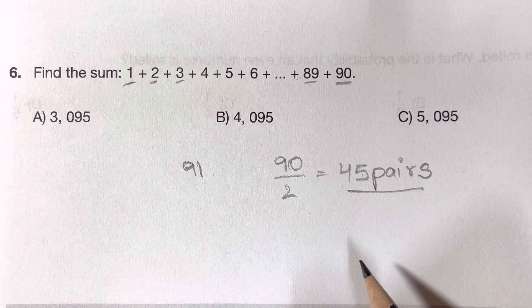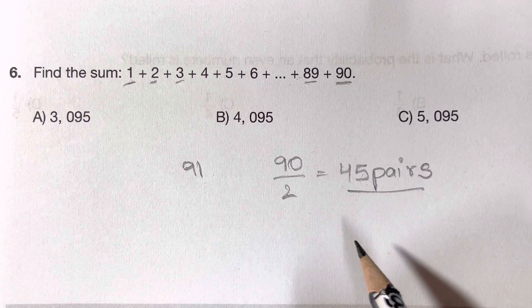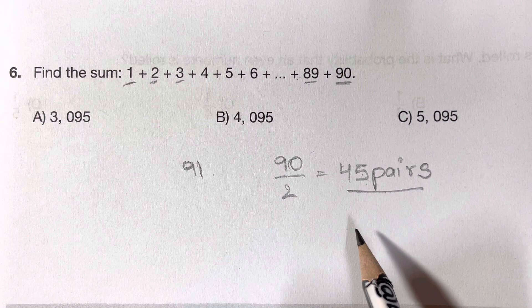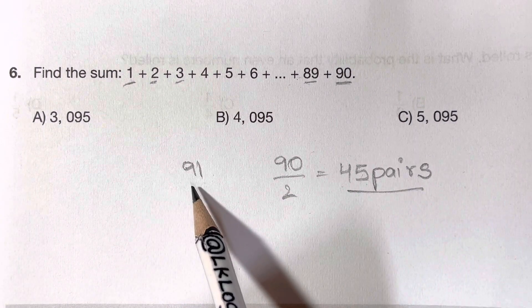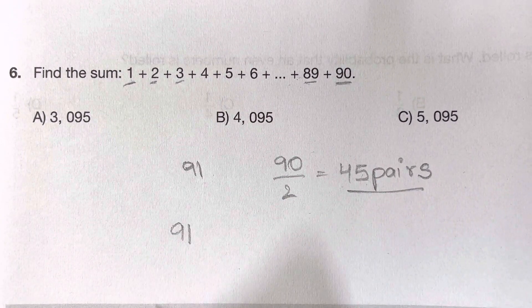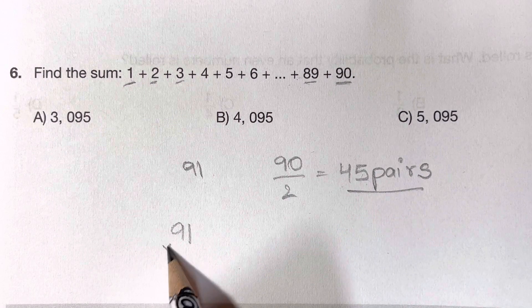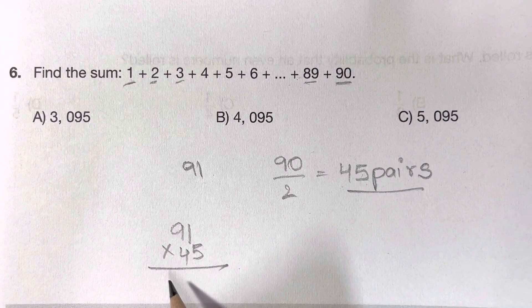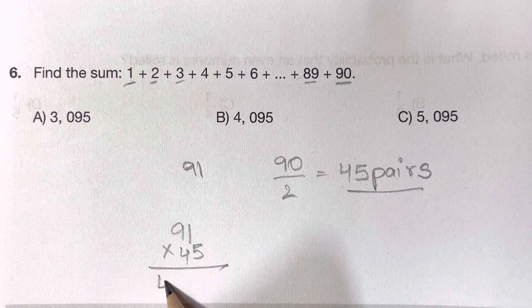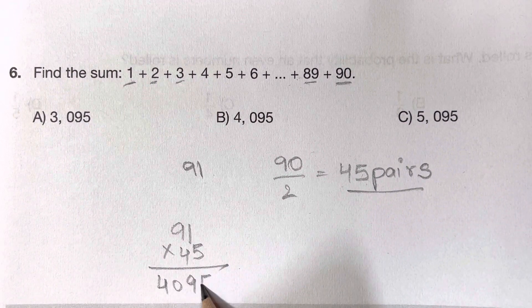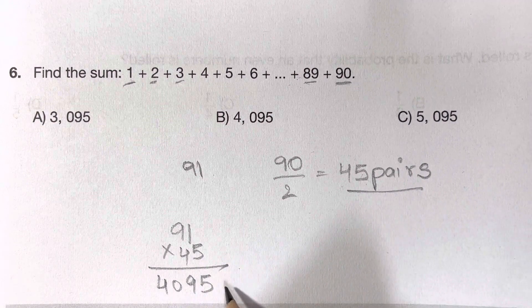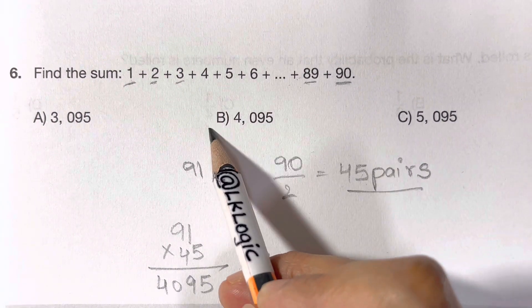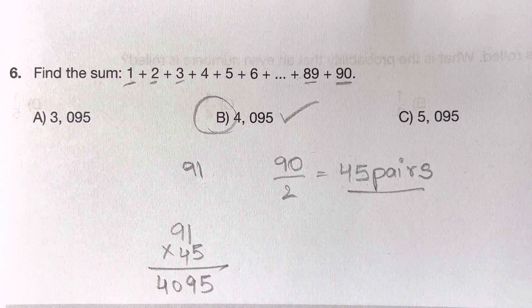So that means all we have to do to find our answer is take 91, multiply by the number of pairs, that is 45, and that gives you 4,095. So that's your answer, choice B, 4,095.